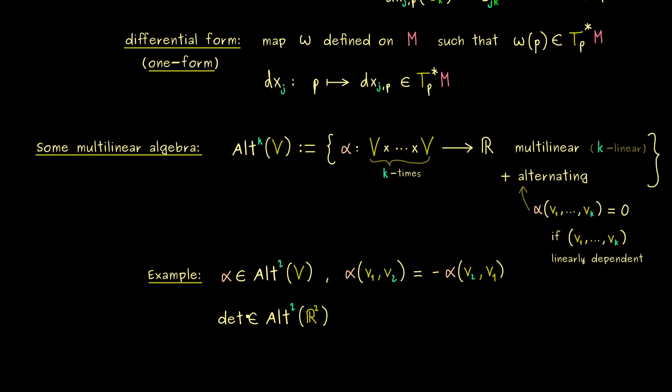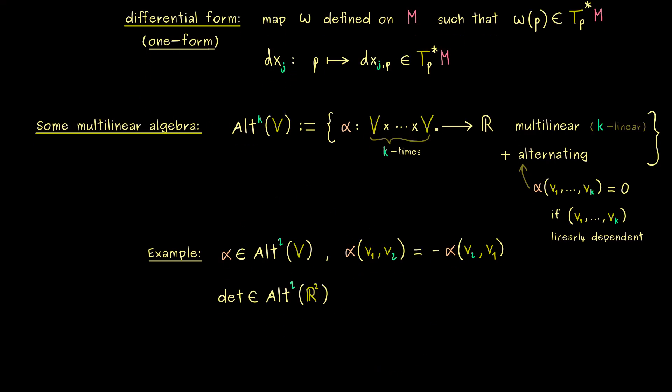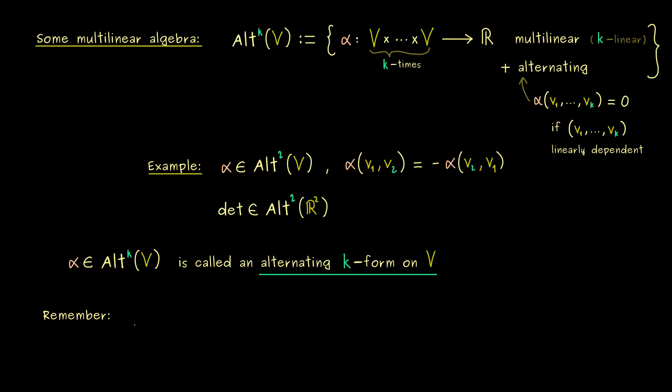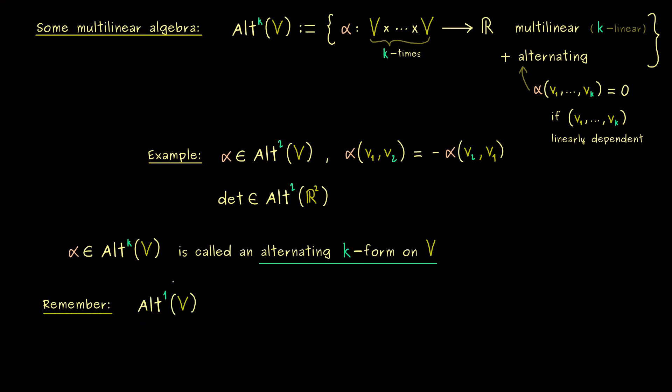So there you see it, alternating just means that we have to add a minus sign if we exchange two vectors. And therefore you should immediately see that the determinant map on R^2 is an example here. However, it's by far not the only example, so please remember that. Still it's a very good example and we will use it later on when we integrate on manifolds again. So now it's a common thing that usually one calls such an alpha here also a k-form. But in order to make it not too confusing here I will call it an alternating k-form on V.